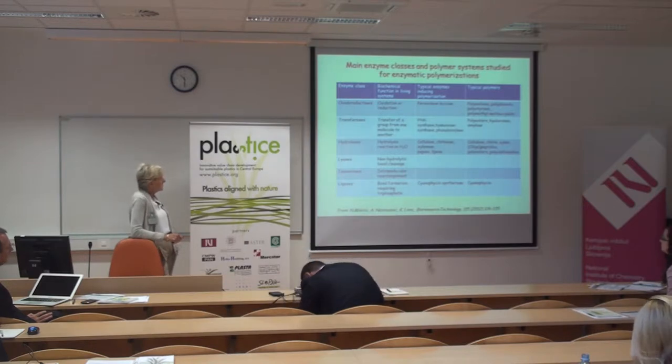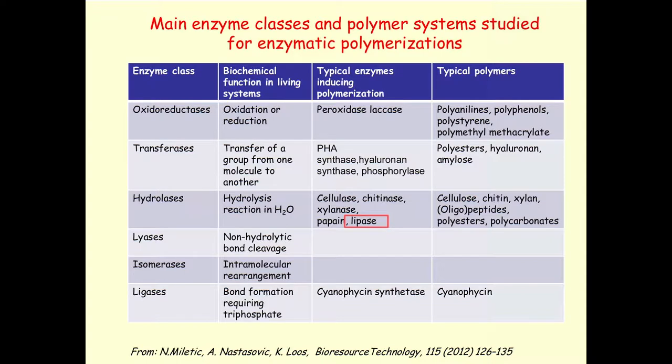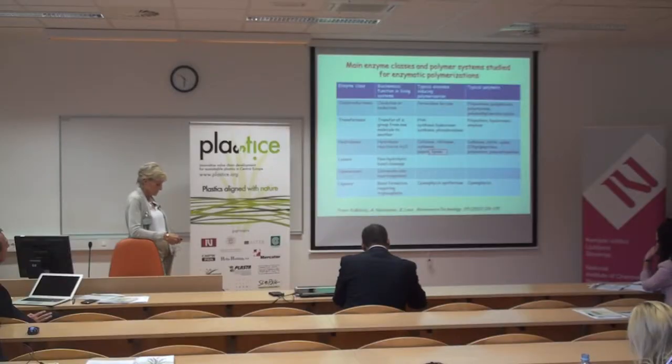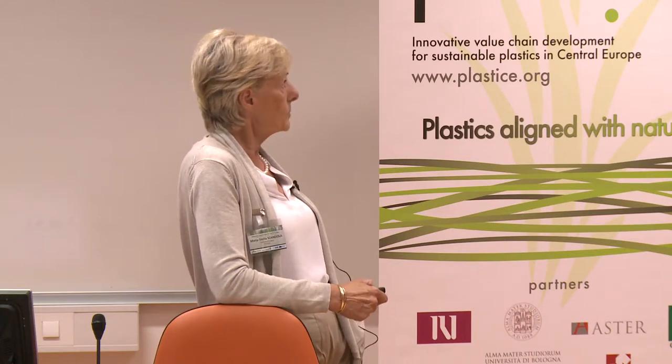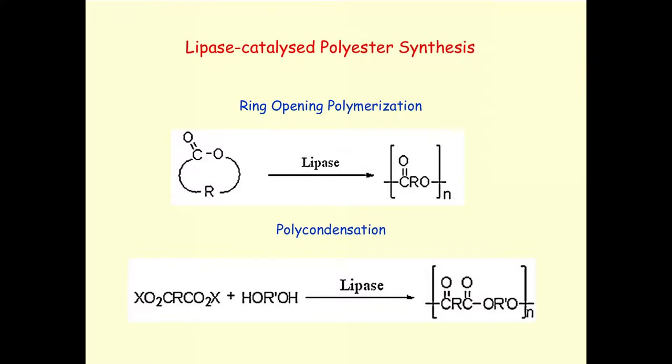There are many different enzymes that can be used to produce polymers — hydrolases, lyases, isomerases, etc. I will focus on lipases, which were used by our co-workers to produce essentially polyesters. Using lipase, you can employ them both in ring-opening polymerizations and in polycondensations.